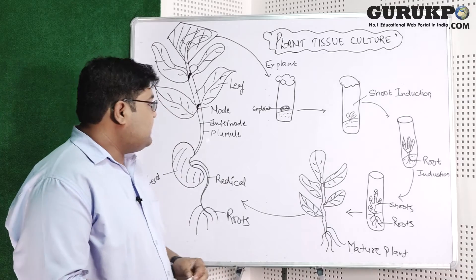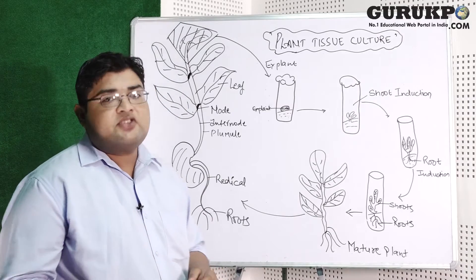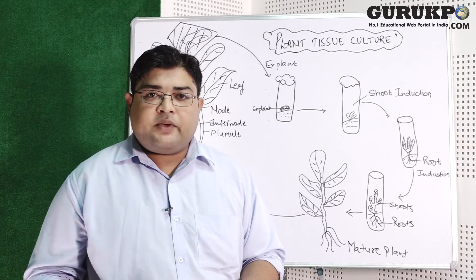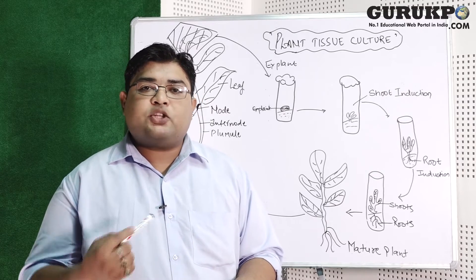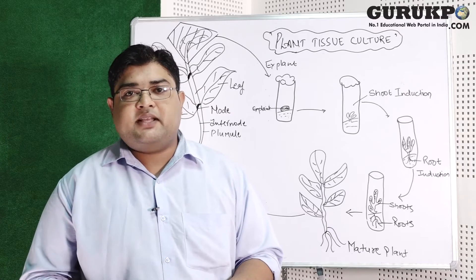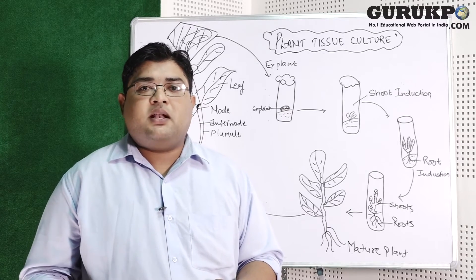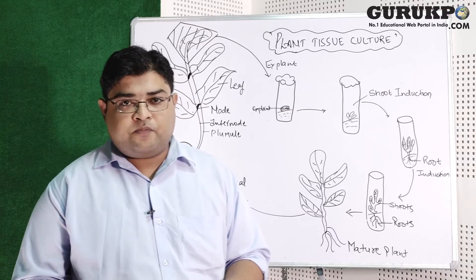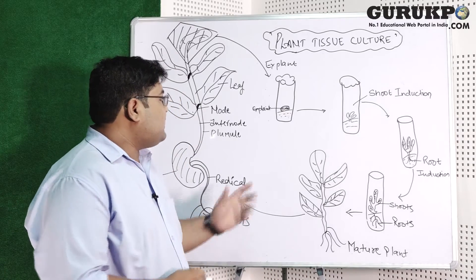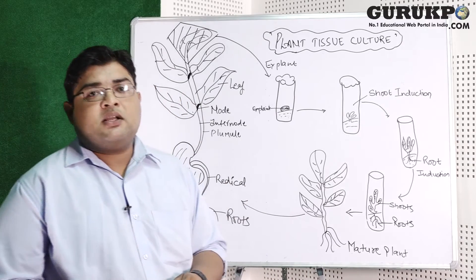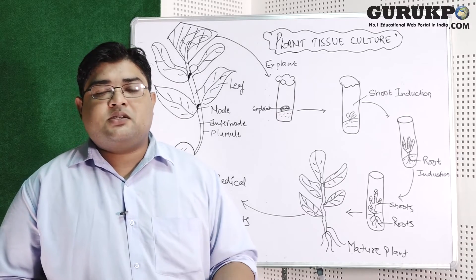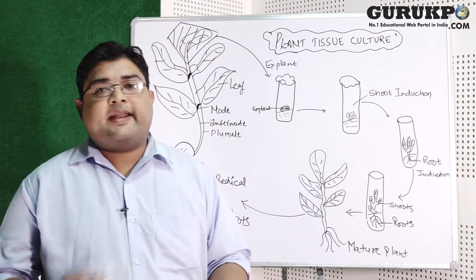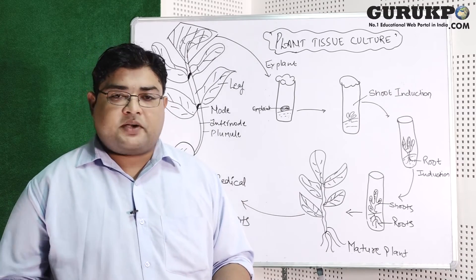Third, genetic engineering approaches are now being utilized to improve the quality and quantity of nutrition in crops like cereals and grains. For this, plant tissue culture technique is used to treat the chloroplast or other genomic DNA of these plants to enhance their nutritional properties.